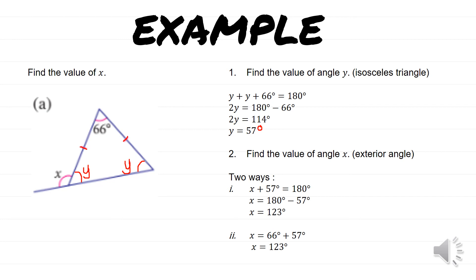Now we have found y, so we can find x. There are two ways. The first way: x plus y equals 180, so x equals 180 minus 57, giving x equals 123 degrees. Or using the second method: x equals 66 plus 57, which also gives 123 degrees. It's the same answer.